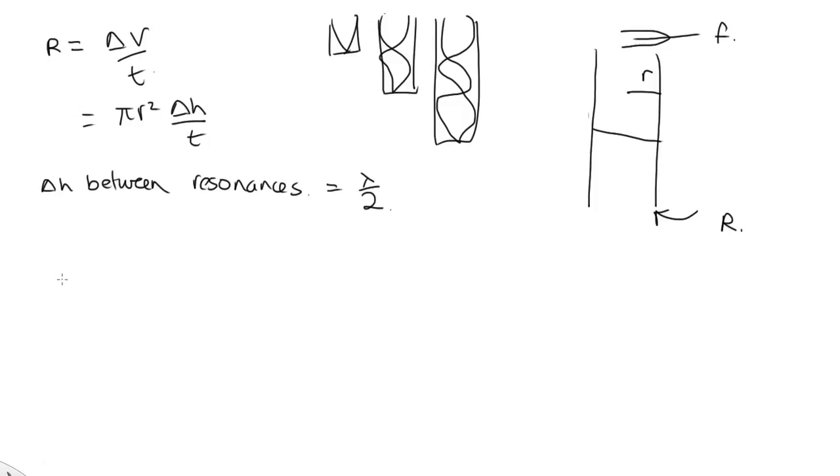So what we have is R is equal to pi little r squared lambda over 2t. And what we're asked for is the time between these resonances. So just rearranging this, we get the time between them is equal to pi r squared lambda over 2R.